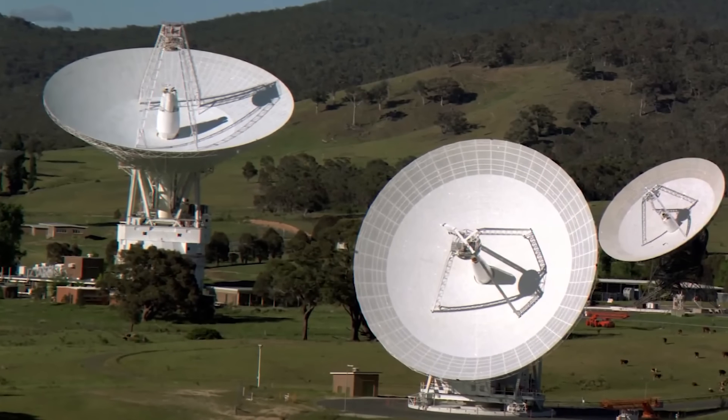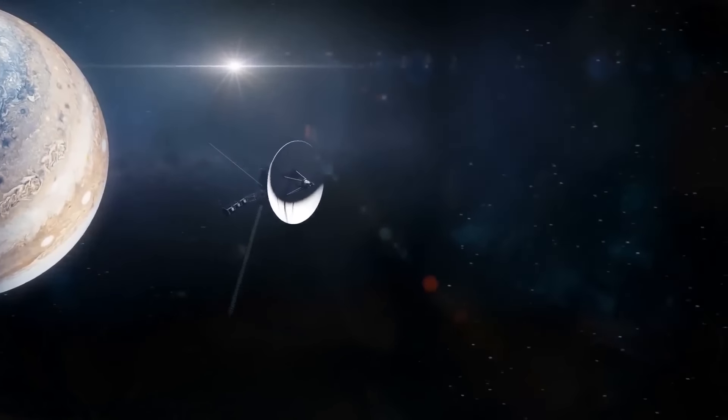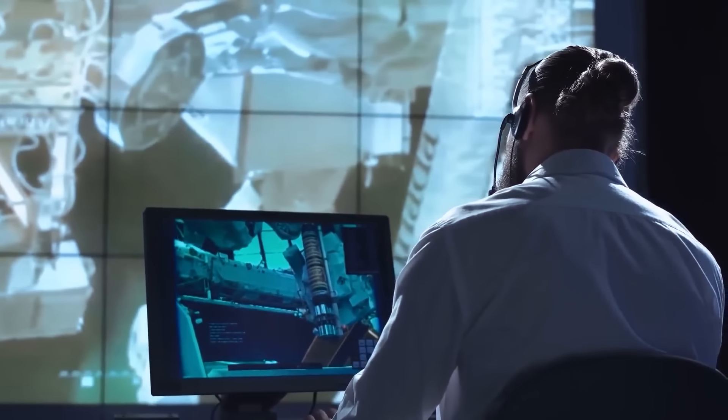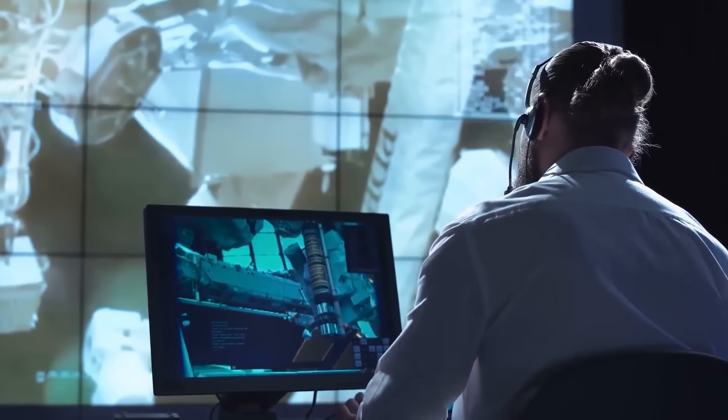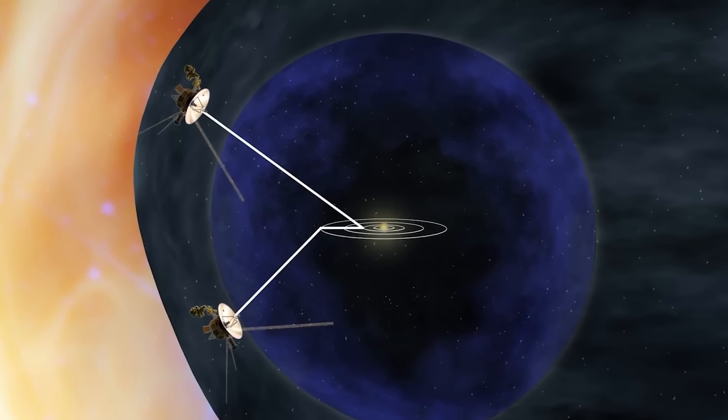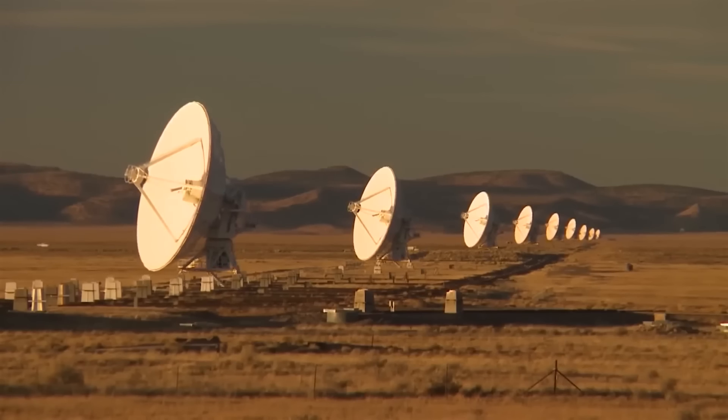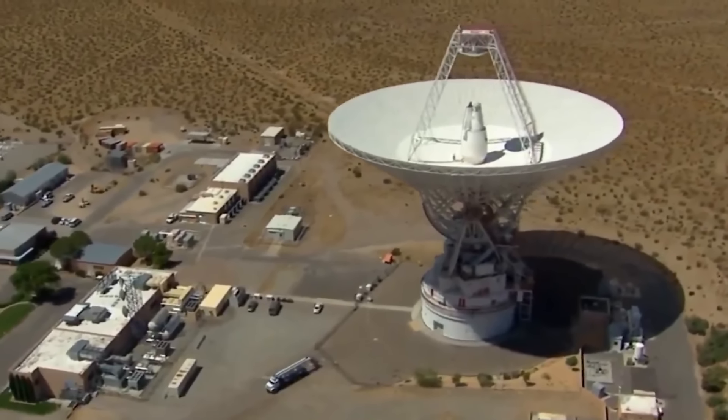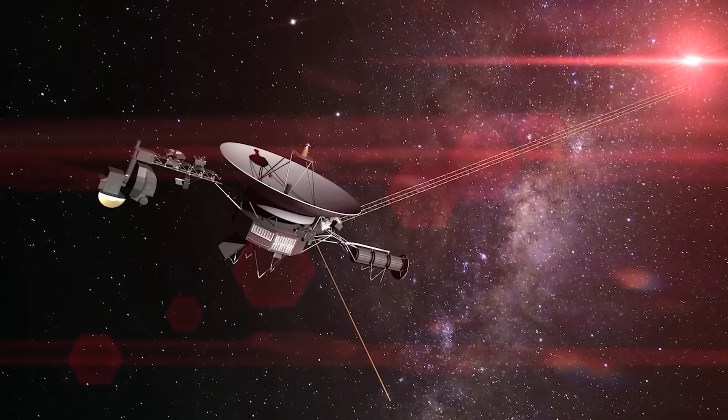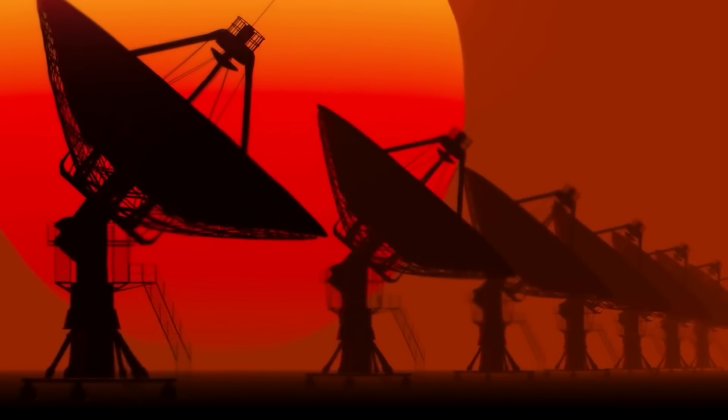One of the most remarkable aspects of the DSN is its unwavering dedication. It operates 24/7, constantly listening for signals from distant spacecraft. This tireless vigilance ensures that we remain connected to our cosmic explorers, even as they venture into the uncharted territories of interstellar space. The Deep Space Network is more than just a collection of antennas. It is a vital lifeline that connects us to the vast expanse of the universe. As the Voyager probes continue their journey, the DSN will remain our steadfast companion, helping us uncover the mysteries of the cosmos.